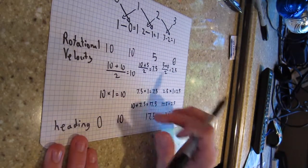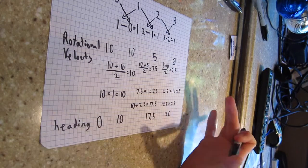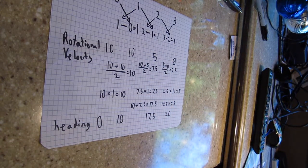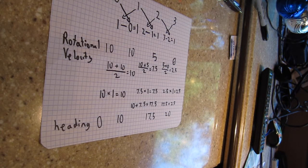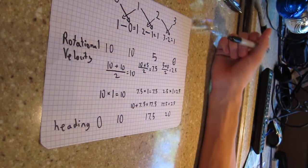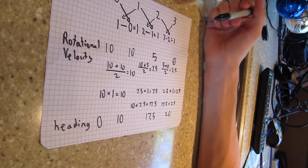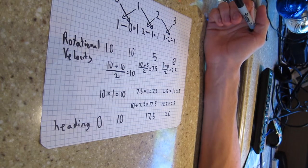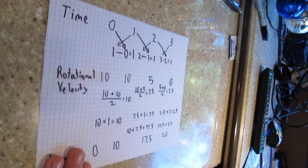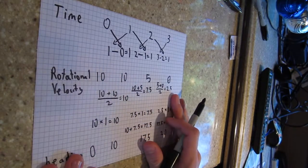So we calculated our heading. And if the computer is doing this really, really fast, then we'll get something that looks like a current heading. It won't be perfect, but it'll be really, really close when the computer is running this as fast as it can. And instead of having 1 second intervals, we'll have like tenth of a second intervals.